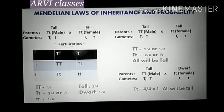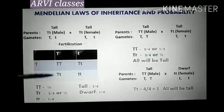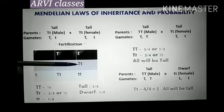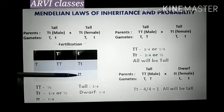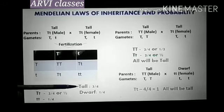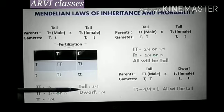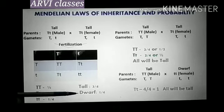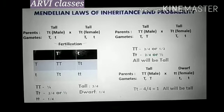If we observe the phenotypic ratio, then out of four offspring, three will be tall and one will be dwarf. So the probability of getting dwarf is 1 by 4.